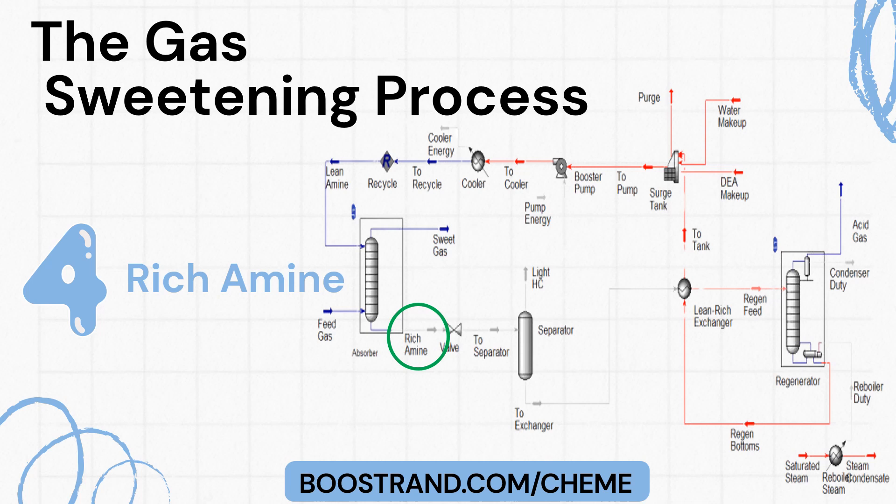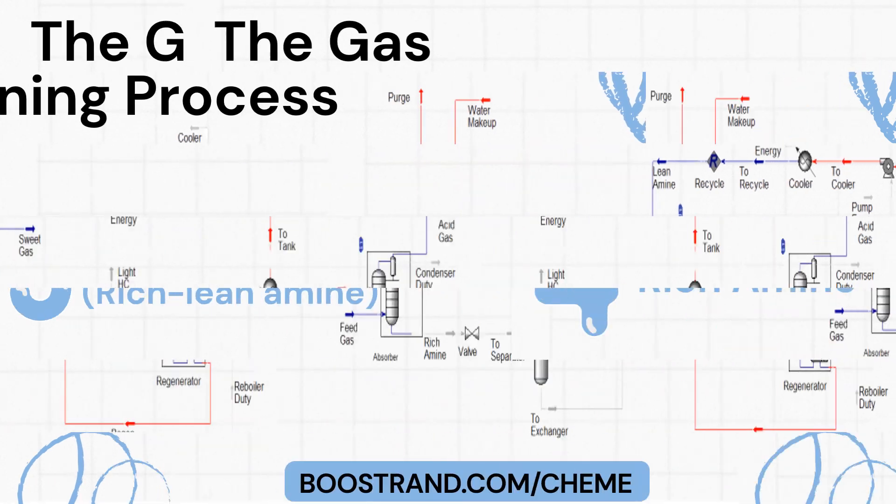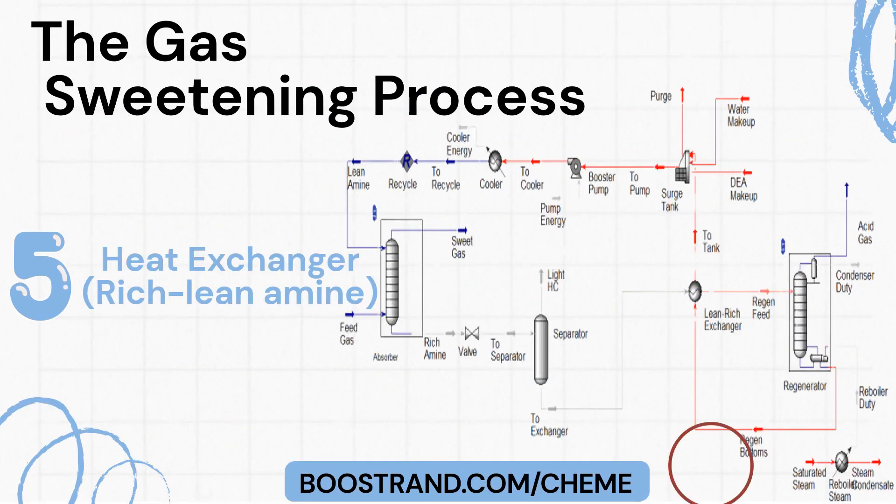Amine loaded with acid gases — rich amine — moves to the regeneration section. Rich amine is preheated by hot, regenerated, lean amine coming from the regenerator.